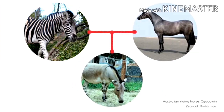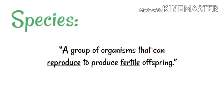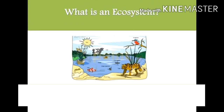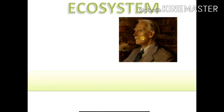Let us take the example of a zebra and a horse. Their offspring is known as zebraoid. But when a zebra is mated with another zebra, it can't produce offspring. So, species is a group of organisms that can reproduce to produce fertile offspring. Let us learn what is an ecosystem. This term, ecosystem, was coined by A.G. Tansley in the year 1935.